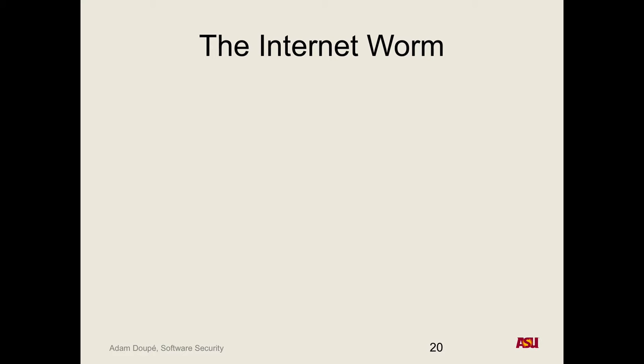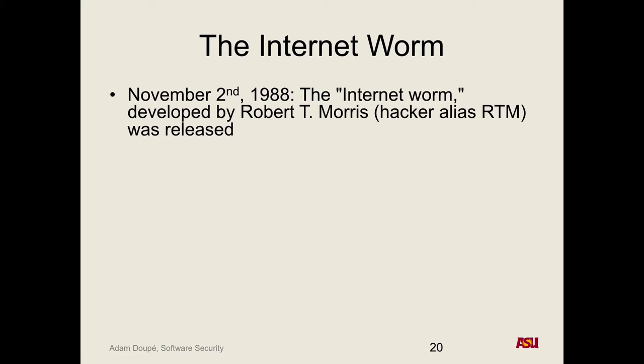The next really notable incident was the Internet Worm. In 1988, it was called the Internet Worm because it was apparently the first one. It was developed by a student with the hacker alias RTM — Robert Tappan Morris. A worm is a piece of software that takes advantage of a vulnerability, scans the network, finds other computers vulnerable to the same vulnerability, exploits it, copies itself over to that machine, and runs on that machine to keep spreading — like a viral infection throughout the network.